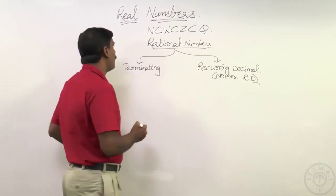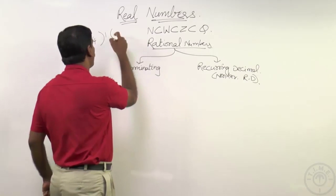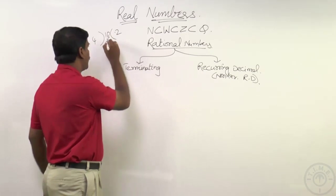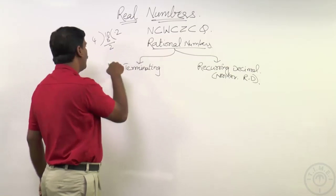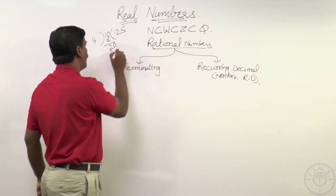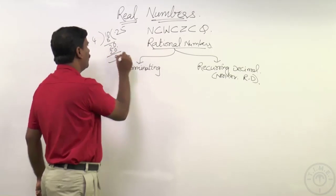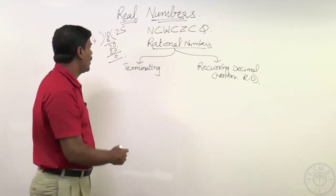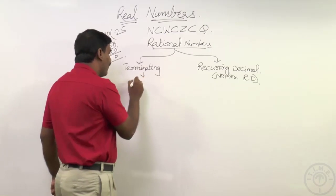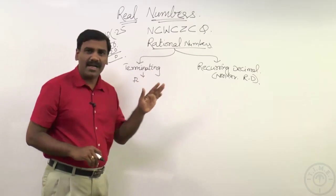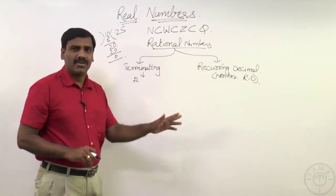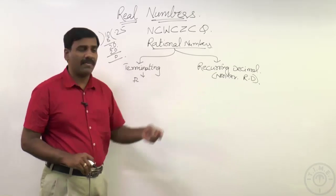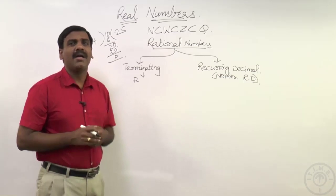For example, one by four: one is not divisible by four directly, so we place a decimal point — ten divided by four goes two times giving eight, leaving remainder two. Bring down zero to get twenty; four goes five times giving twenty, leaving zero. We get remainder zero, which is the indication of a terminating decimal. Terminating means it has an end — after a finite number of decimal places, the number ends.